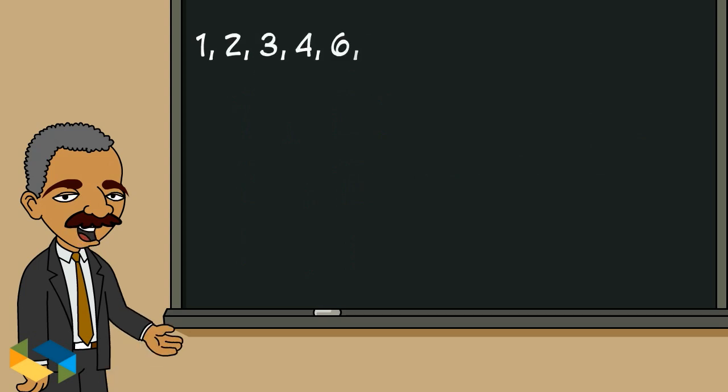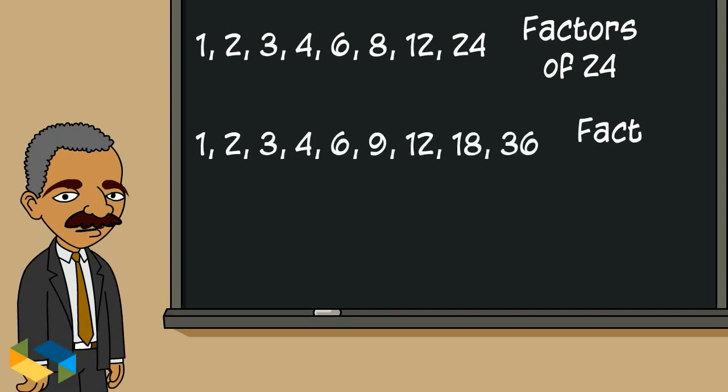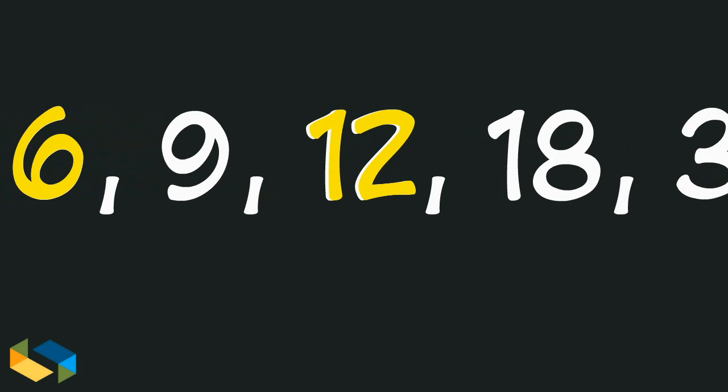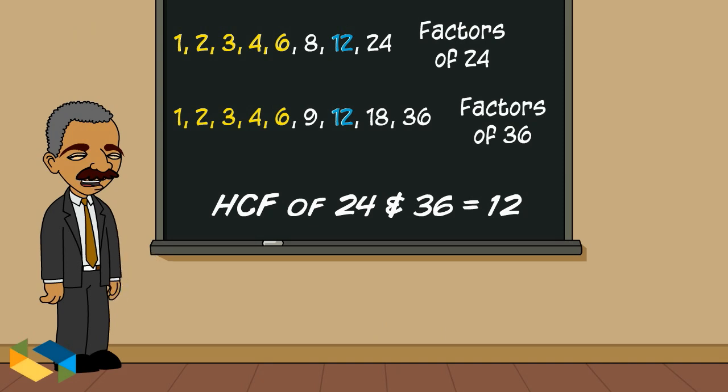All of these numbers are factors of 24. Likewise, all of these numbers are factors of the number 36. I see some of the numbers in both these lists being common. The biggest or the highest being 12. So the highest common factor or HCF of 24 and 36 is 12.